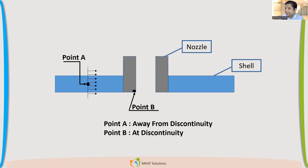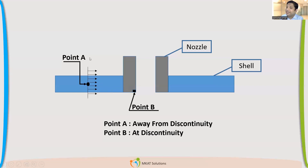This is a typical diagram. This is a shell — the blue color you see is the shell — and there is a nozzle connected to that shell. There are two points. There is a point A, which is quite away from the nozzle — away from any discontinuity. A nozzle is a kind of discontinuity. So point A is quite away from any discontinuity.